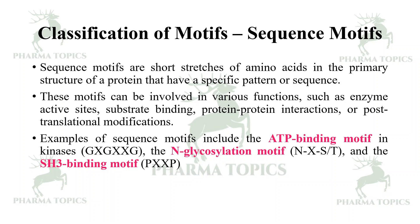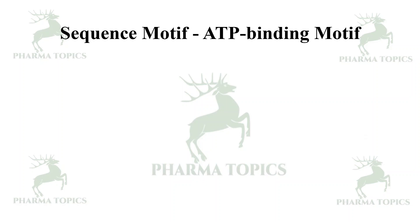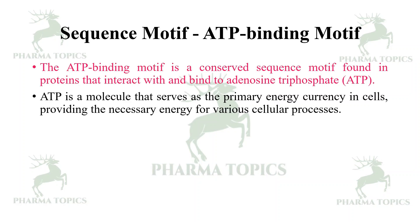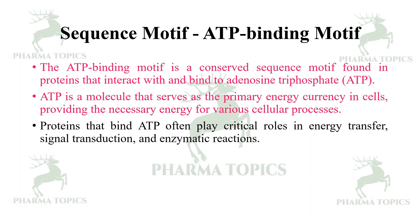Examples of sequence motifs include the ATP binding motif in kinases, the N-glycosylation motif, and the SH3 binding motif. The ATP binding motif is a conserved sequence motif found in proteins that interact with and bind to adenosine triphosphate. ATP is a molecule that serves as the primary energy currency in the cells, providing the necessary energy for various cellular processes.